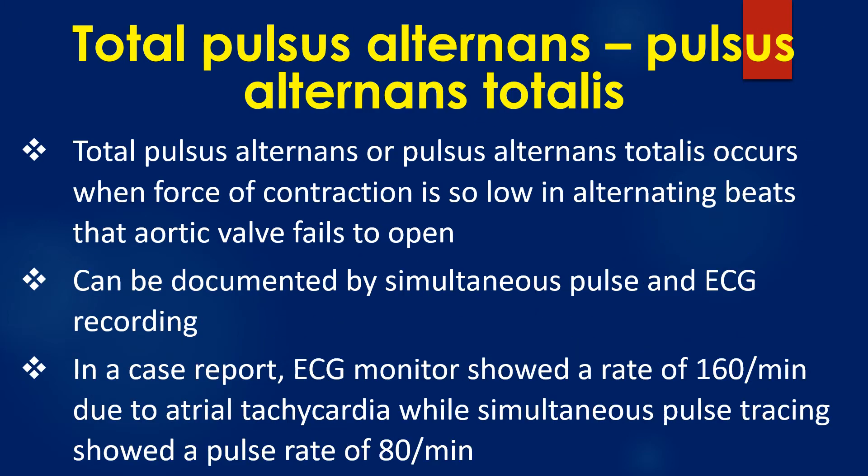Total pulse alternance, or pulse alternance totalis, occurs when the force of contraction is so low in alternating beats that the aortic valve fails to open. It can be documented by simultaneous pulse and ECG recording. In an interesting case report, the ECG monitor showed a rate of 160 per minute due to atrial tachycardia,